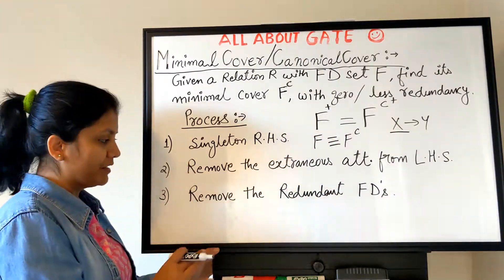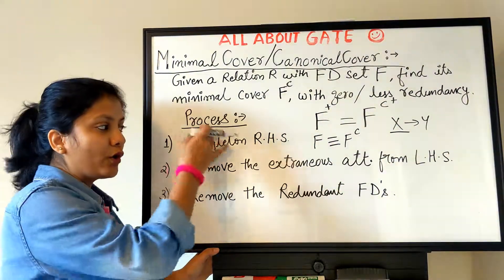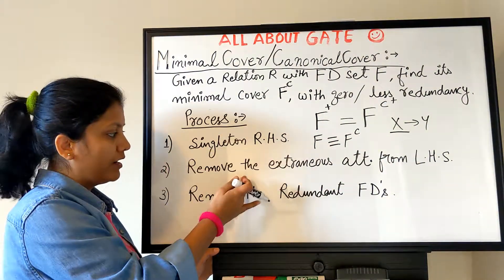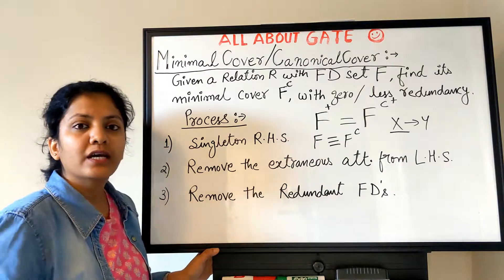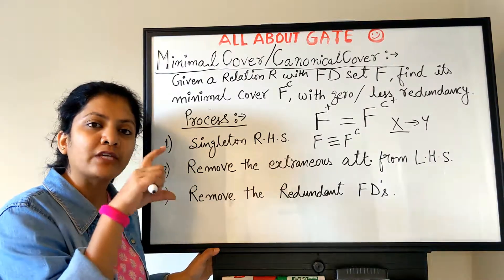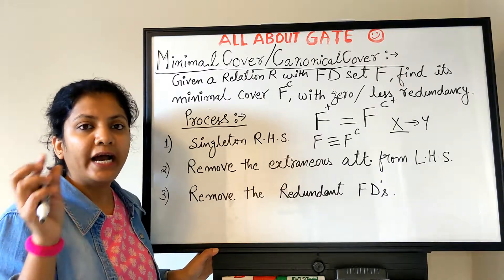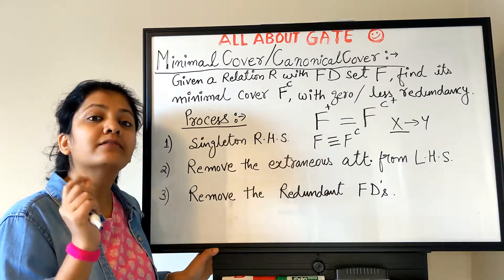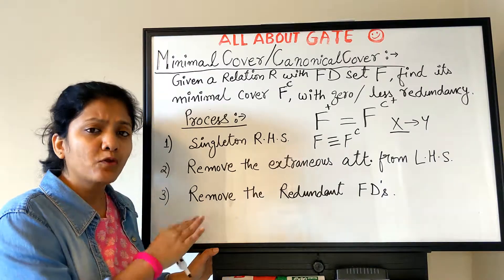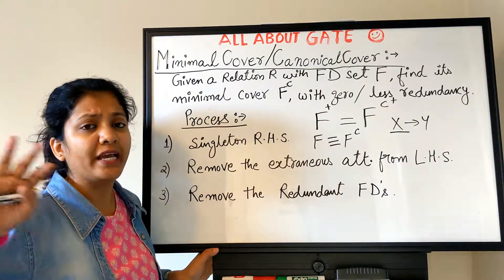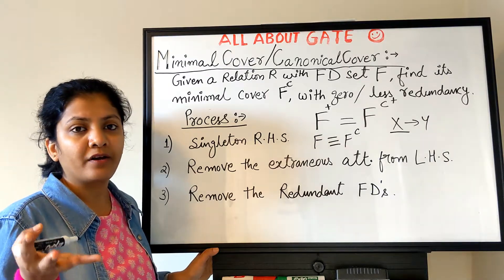The third step is the final one: remove the redundant FDs. After applying all these rules, you check your entire FD set and go through each FD one by one to find out which FD is redundant — meaning if you remove it, there is going to be no change in the implication of your FD set.